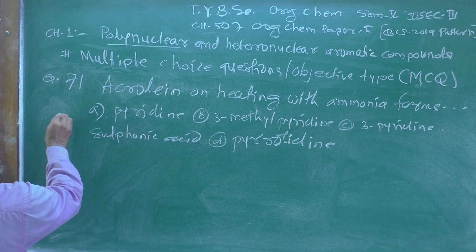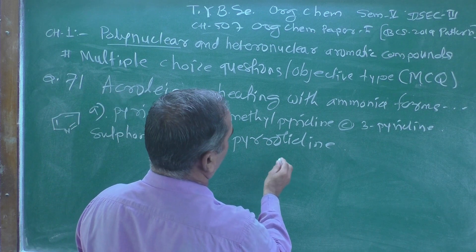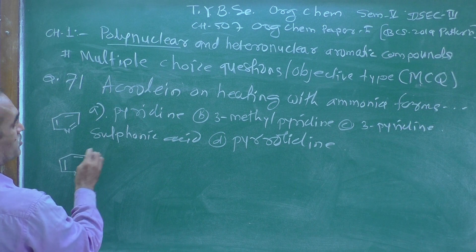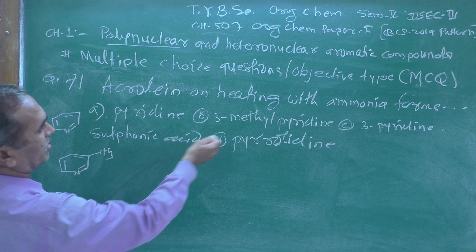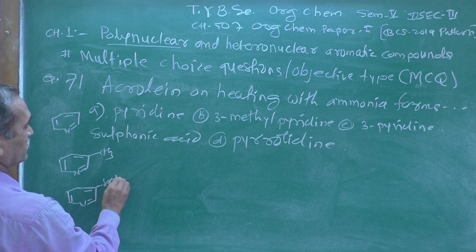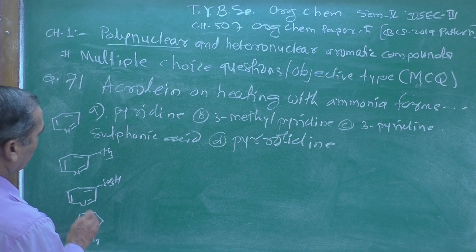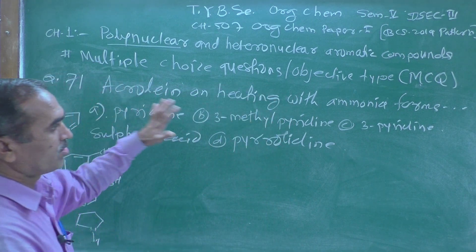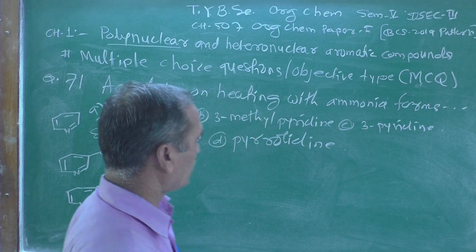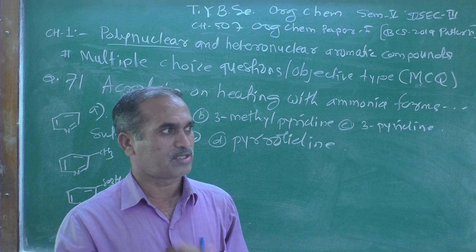Let's look at the structures. Everybody knows the structure of pyridine. For 3-methylpyridine, the methyl group is at the third position. For 3-pyridine sulfonic acid, the SO3H group is on the pyridine ring. Now, if you remember the synthesis of pyridine, the starting compound is acrolein, which can be prepared using the famous aldol condensation reaction.